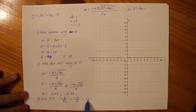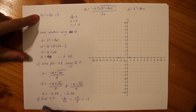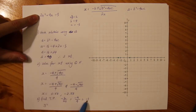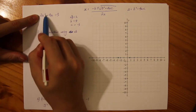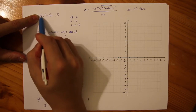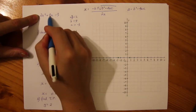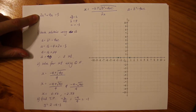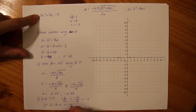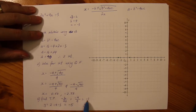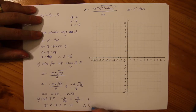Let's substitute X equals minus 1 back into the equation. Y equals 2 times (minus 1) squared plus 4 times (minus 1) minus 3. Minus 1 squared is 1, times 2 is 2. Then 4 times minus 1 is minus 4. So Y equals 2 minus 4 minus 3. Minus 4 minus 3 is minus 7, and 2 minus 7 is minus 5. Our turning point is (minus 1, minus 5).